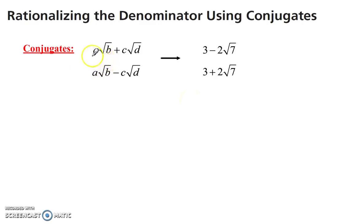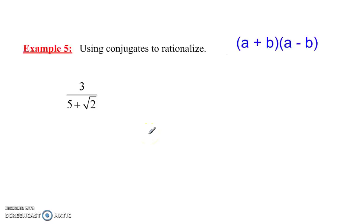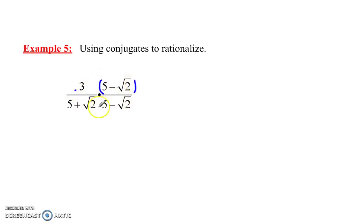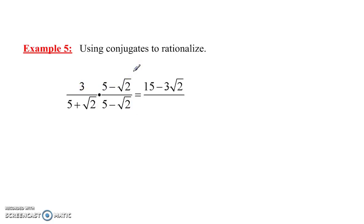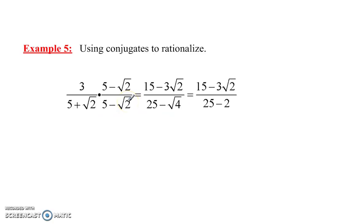Conjugates are expressions that look almost identical except the sign between them is opposite. So a conjugate of 5 plus radical 2 would be 5 minus radical 2. When you multiply (a + b)(a − b), that results in a² minus b², and squaring cancels out the square root. Using the distributive property: 3 times 5 is 15, 3 times radical 2 is 3 radical 2, giving 15 minus 3 radical 2. The denominator is 5² minus (radical 2)² = 25 minus 2 = 23. Rationalized using conjugates.